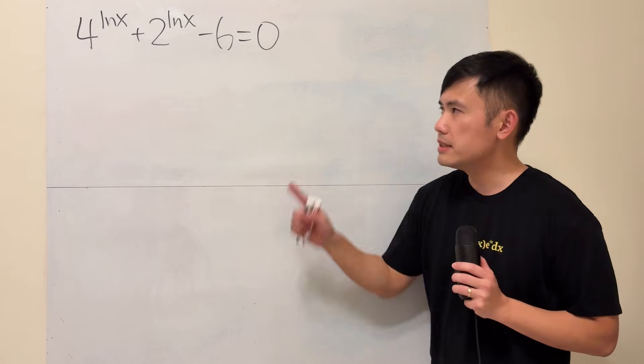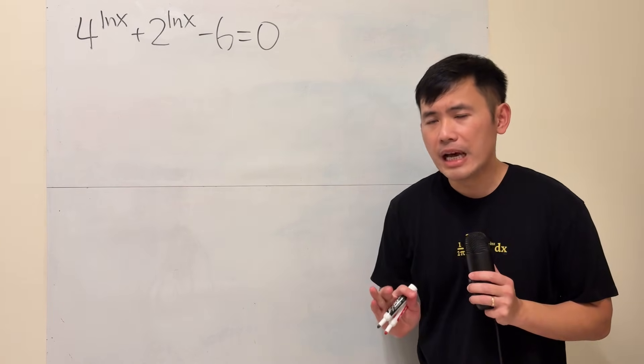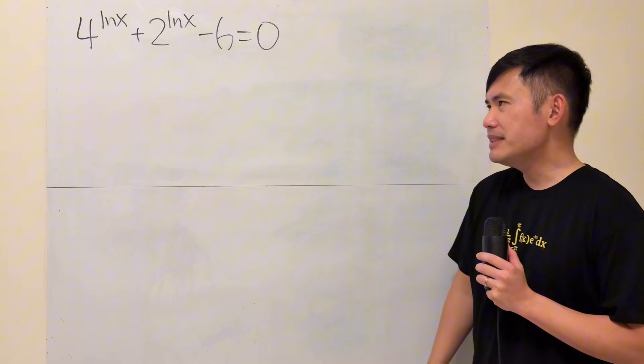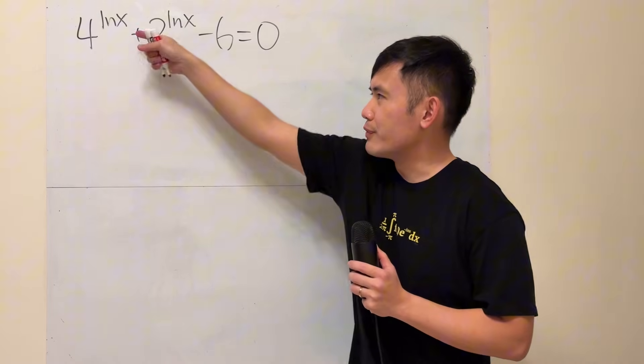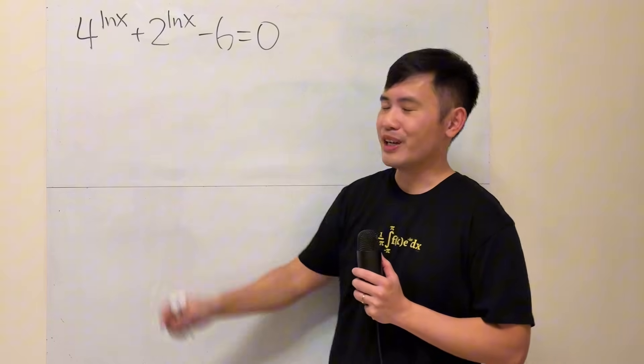When I asked my pre-calculus students this equation, many of them didn't know where to start. I think the reason is because we have the natural log of x in the power, and then we have two of them. And this right here, we have three terms.